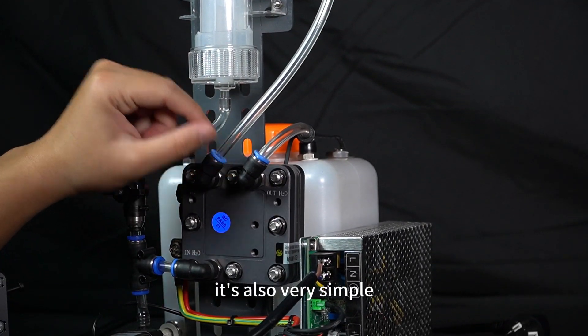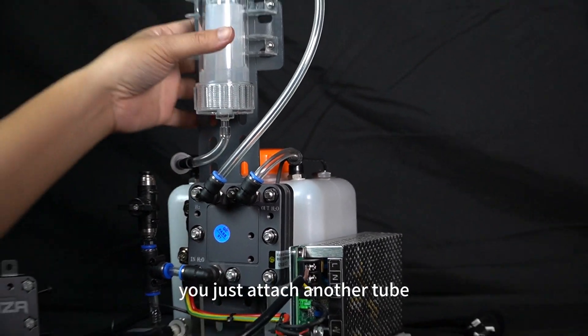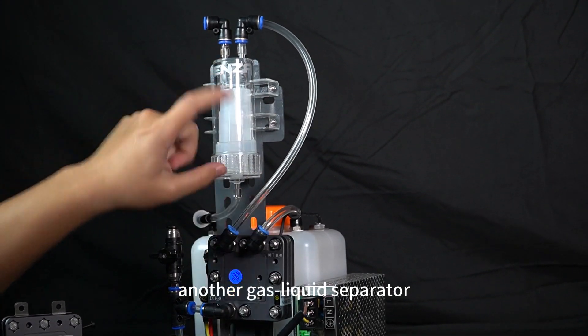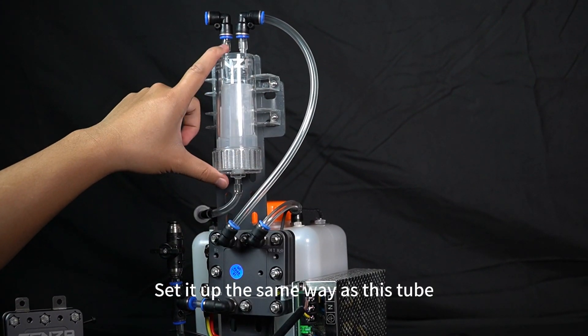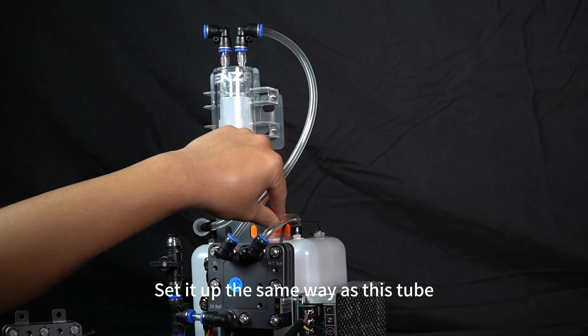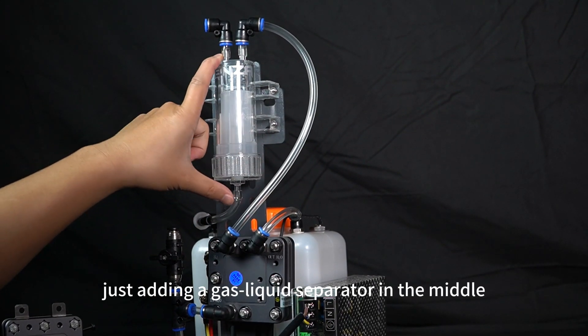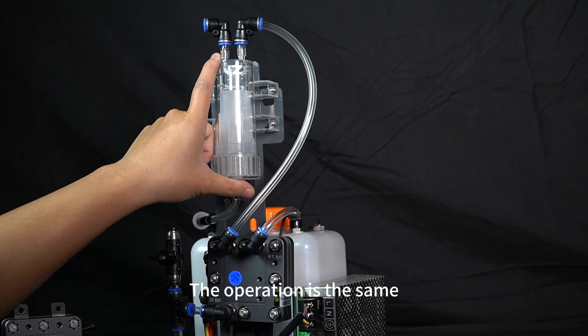If you want to output oxygen separately, it's also very simple. Like here, you just attach another tube, another gas liquid separator, then connect it up and that's it. Set it up the same way as this tube, just adding a gas liquid separator in the middle. The operation is the same.